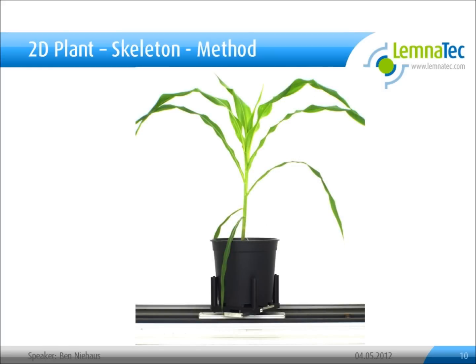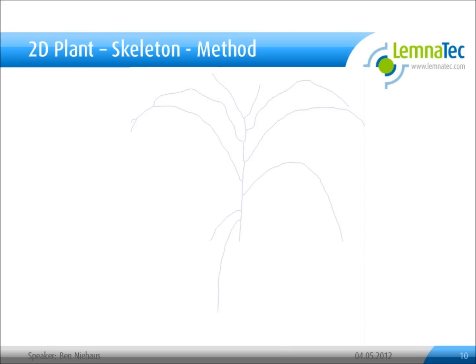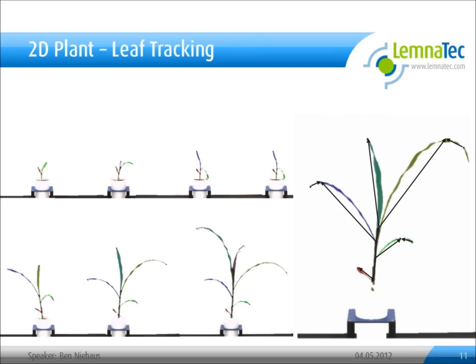To create a skeleton of an object, we first need to find the object of interest using foreground-background separation, then create the skeleton. The skeleton can then be used to identify the stem and the leaves of the object. Applying this technique over time allows us to track a leaf growing over time and get detailed information about the growing behavior of each leaf individually.